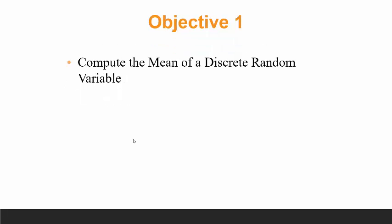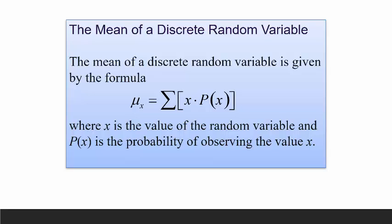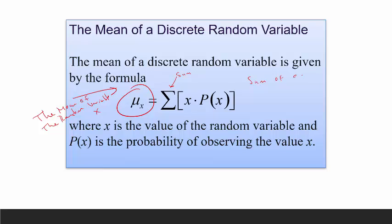Let's talk about how you compute the mean of a discrete random variable. It's a pretty straightforward formula. The mean of a discrete random variable is given by μ sub x, which is read as the mean of the random variable X. It's equal to the sum of each possible x value multiplied by its corresponding probability P(x). You just sum up all those values — each possible value of x times its corresponding probability.